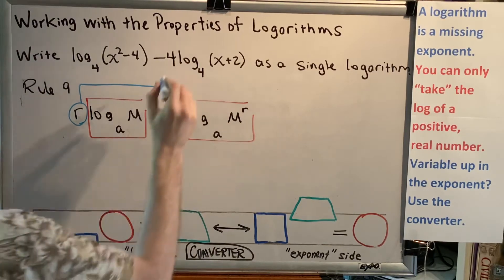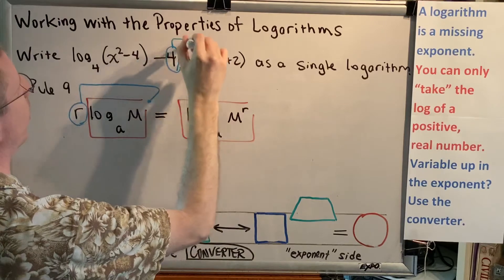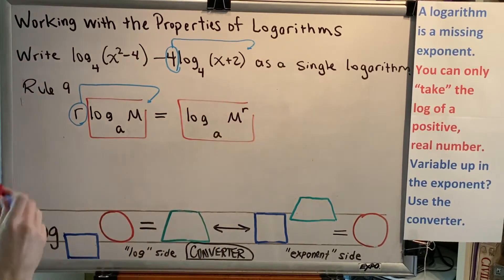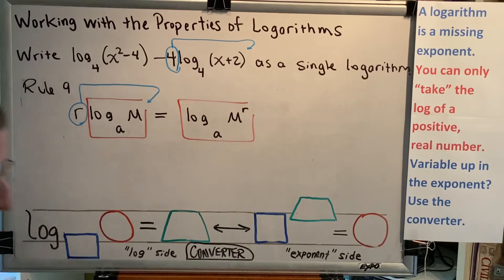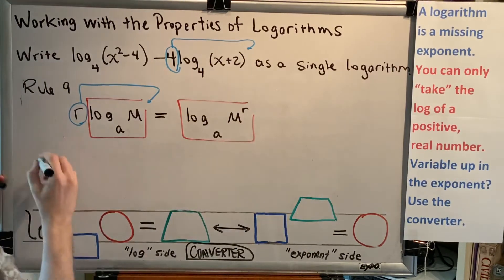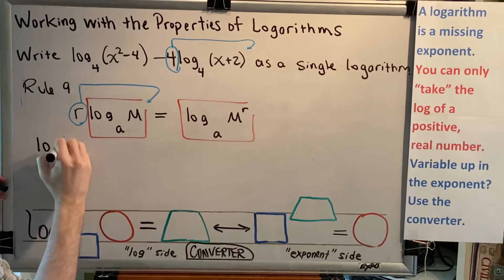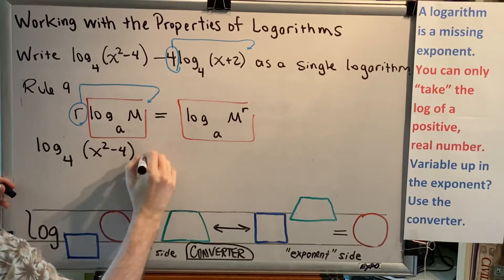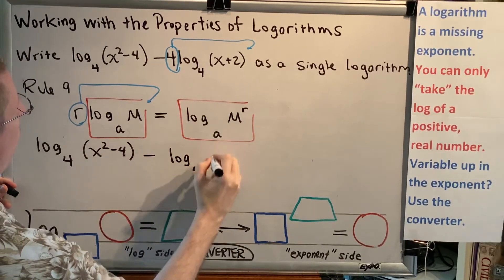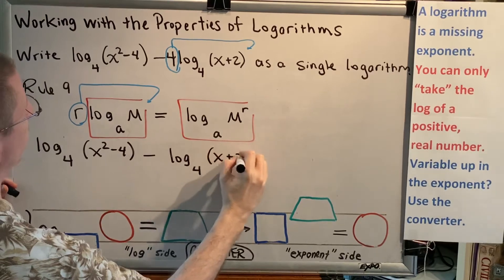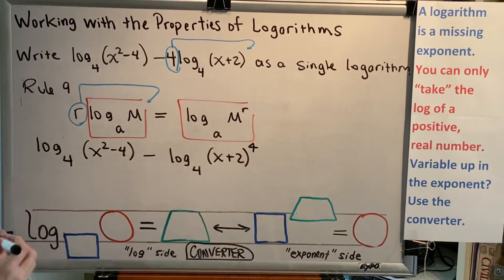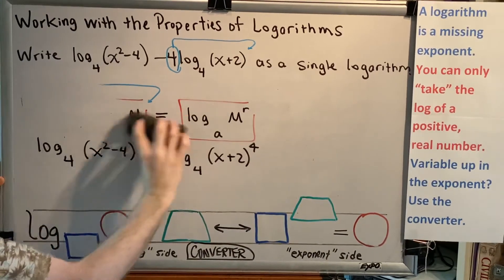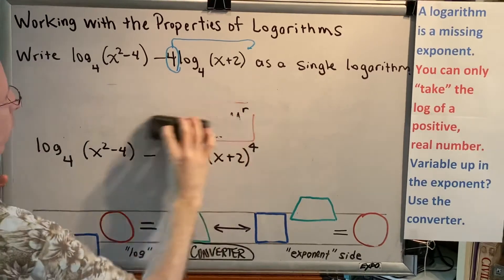Applying that same idea to the problem we're solving, this allows us to take this 4 and move it from outside of the brick to become the exponent of the argument inside the brick. So we will now rewrite our problem as log base 4 of x squared minus 4, minus log base 4 of x plus 2 to the 4th power.